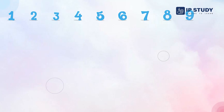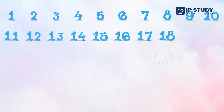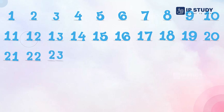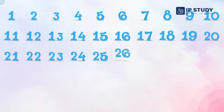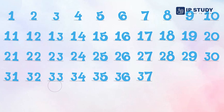Counting 1 to 50: 1, 2, 3, 4, 5, 6, 7, 8, 9, 10, 11, 12, 13, 14, 15, 16, 17, 18, 19, 20, 21, 22, 23, 24, 25, 26, 27, 28, 29, 30, 31, 32, 33, 34, 35, 36, 37, 38, 39, 40, 41.